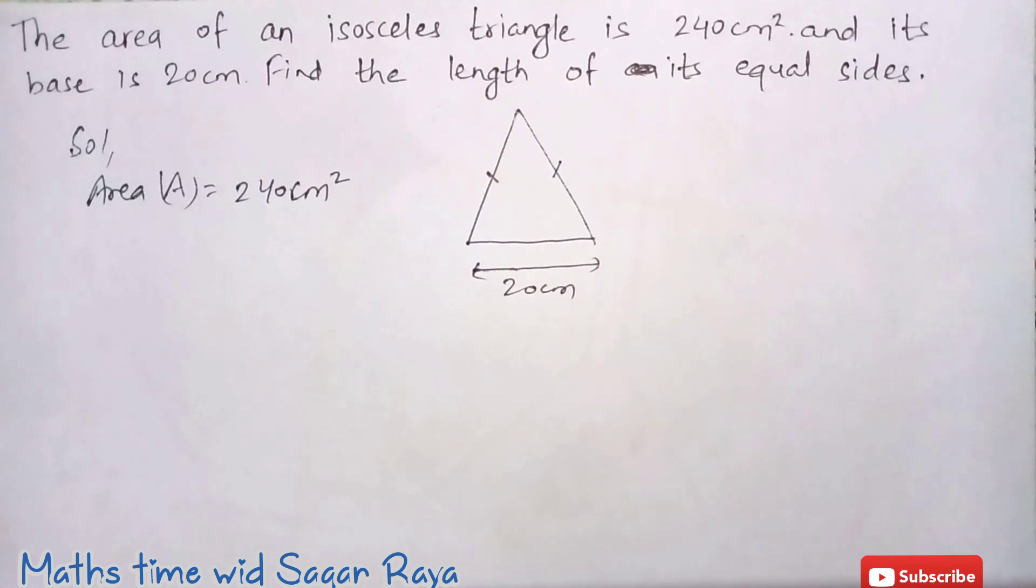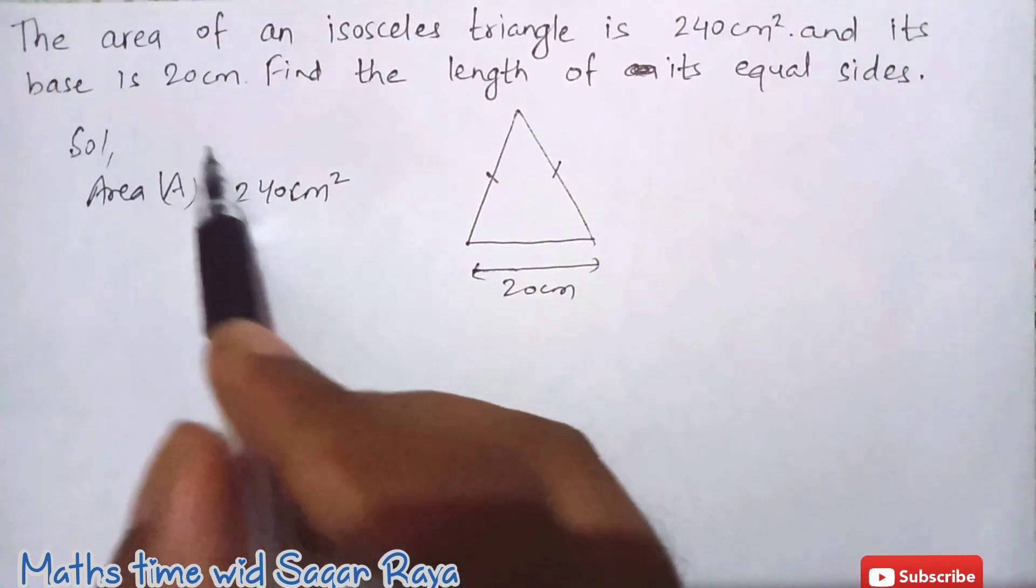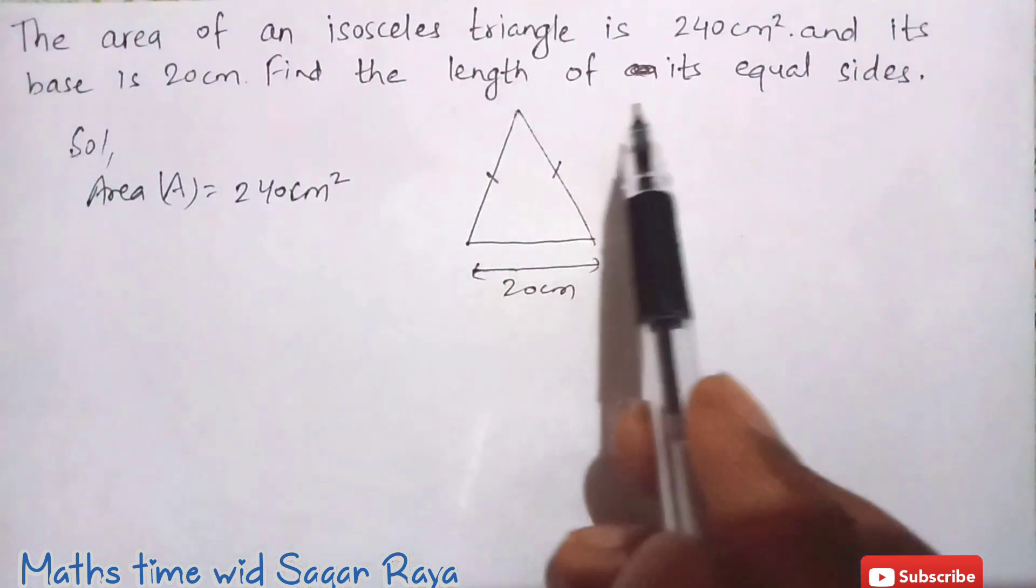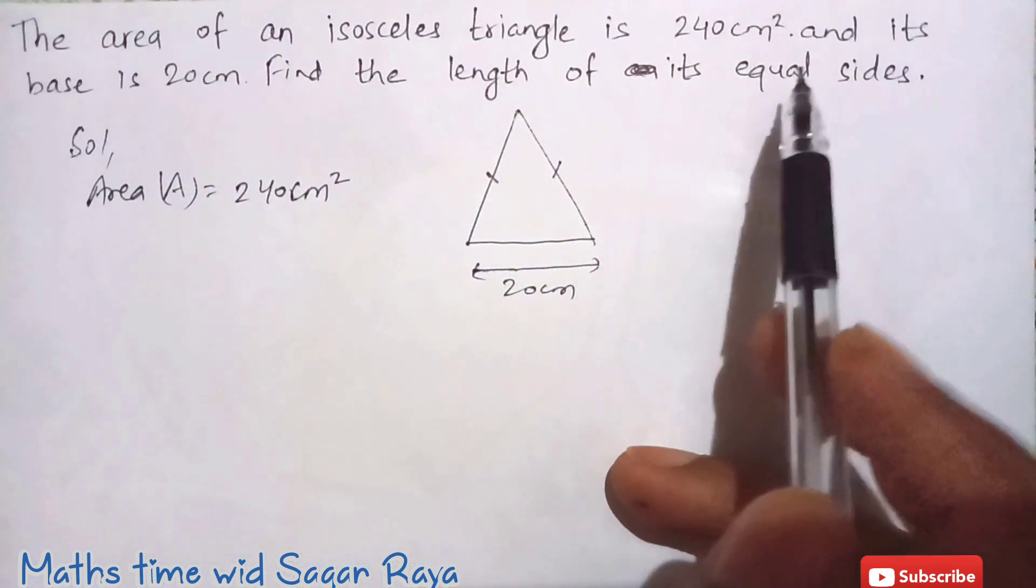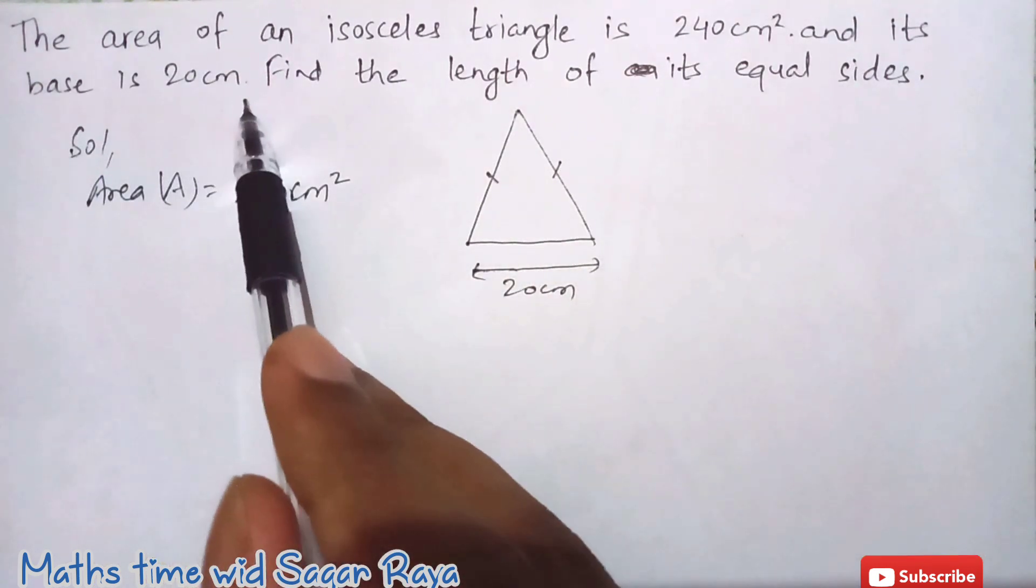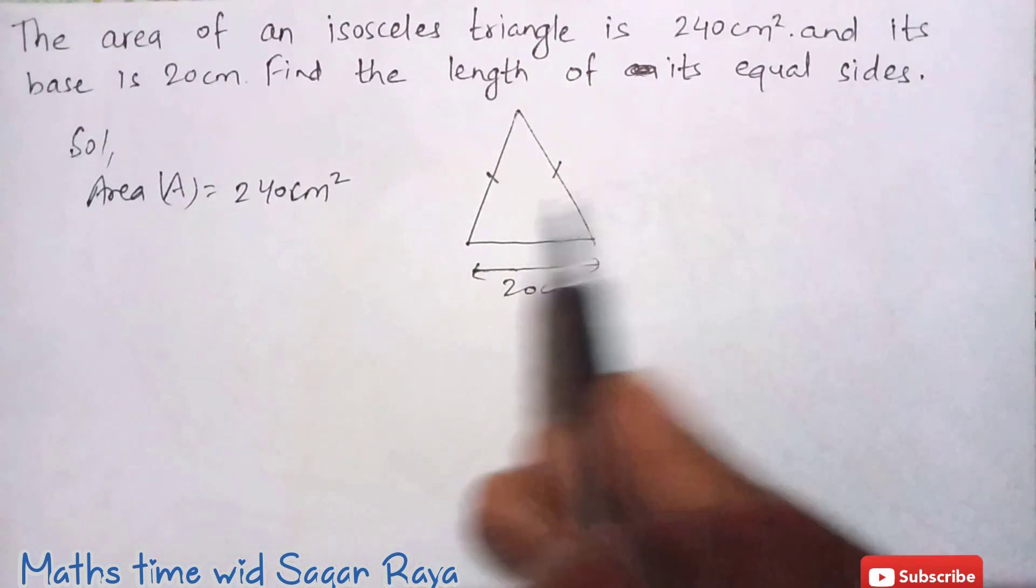Okay, now without any delay let's move to our question. In the screen you can see the area of an isosceles triangle is given 240 cm square and its base is 20 cm. Find the length of its equal sides.